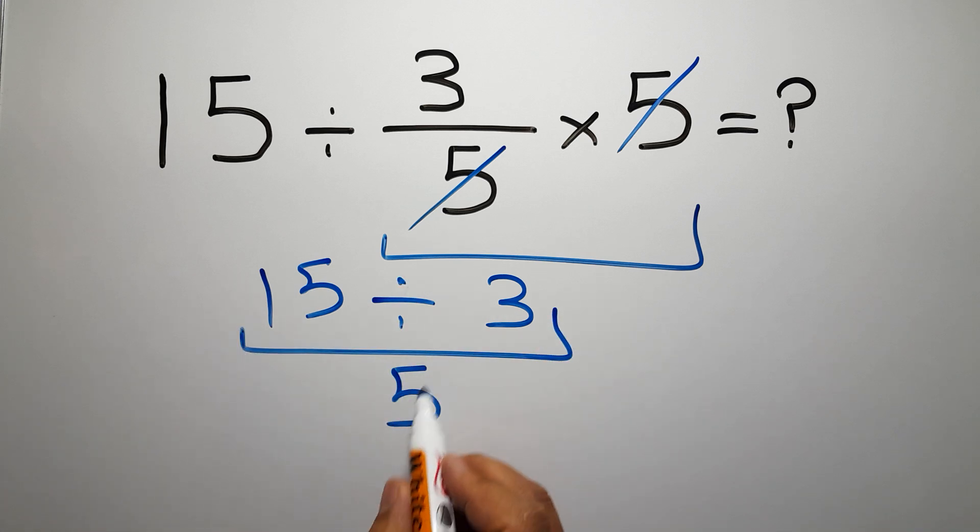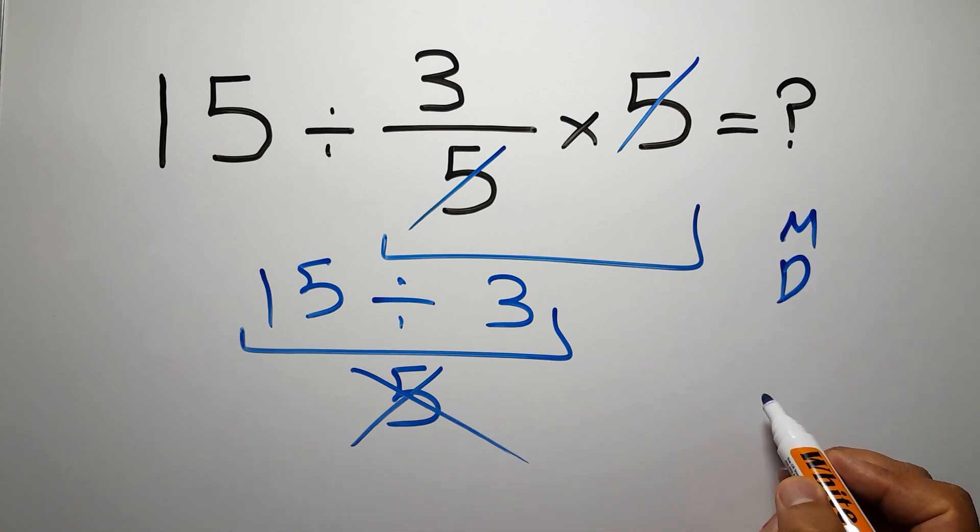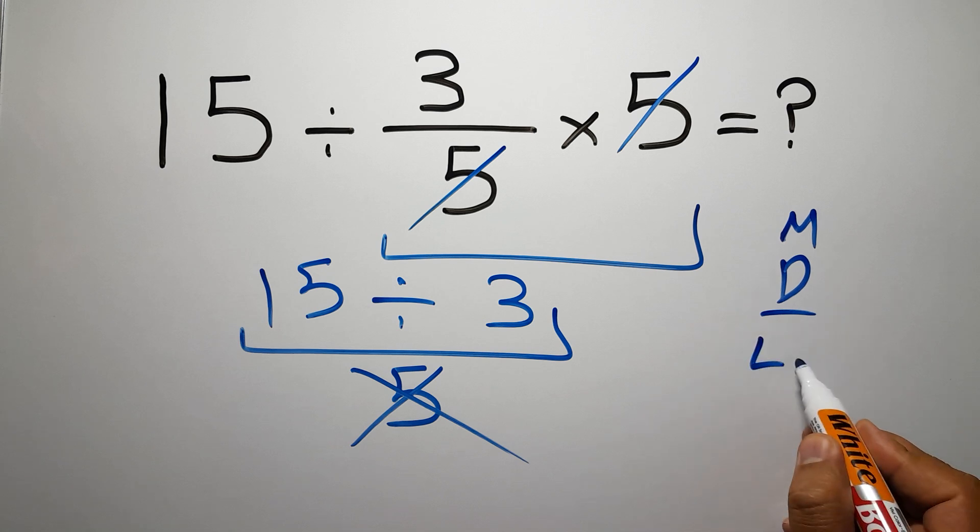But this answer is not correct. Because according to the order of operations, multiplication and division have equal priority and we have to work from left to right.